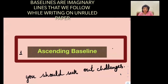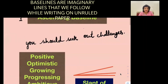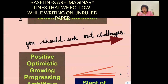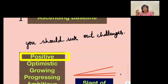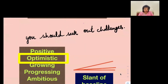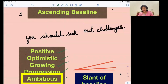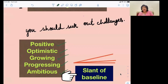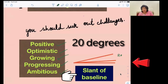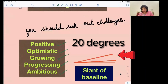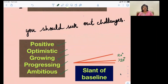The first one is the ascending baseline. You can see this ascending baseline — it is going a little upwards. Those who have an ascending baseline have a positive outlook. They are quite optimistic, have a positive attitude, a growing mindset, and are always thinking about progressing. They are ambitious and looking for future ventures. However, the slant has to be reasonable — about 20 degrees or less is fine. If the slant is more than 20 degrees, it means the writer is not truly optimistic but only pretending to be forward-looking and ambitious.